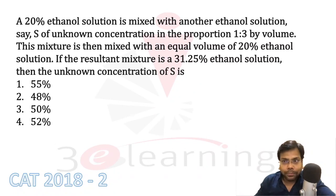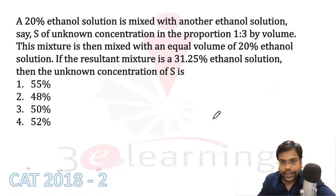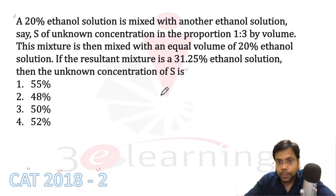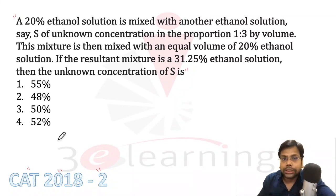Hello friends, welcome again to the world of MathsBaiyamia. This is a CAT 2018 slot 2 question — a question of mixture and alligation. In CAT 2018, my slot was slot 1. This question has been solved by many mentors and books, but I would like to tell you my own solution and method. I would suggest: please pause the video and try to solve this question first.